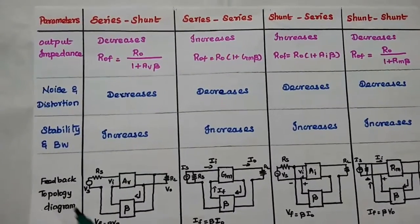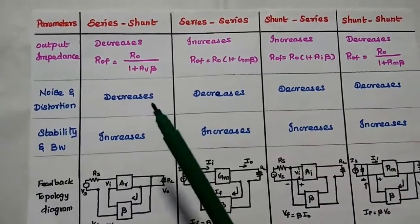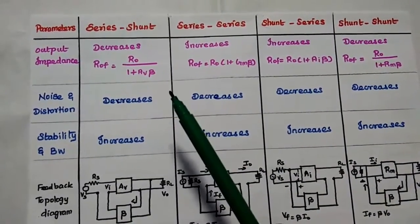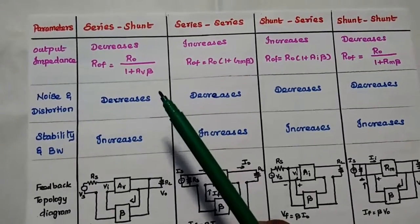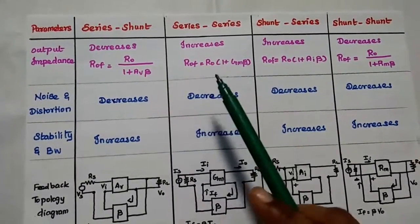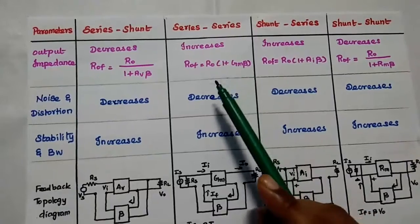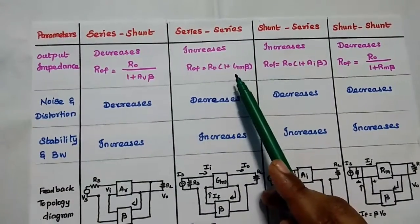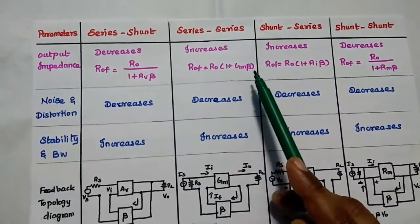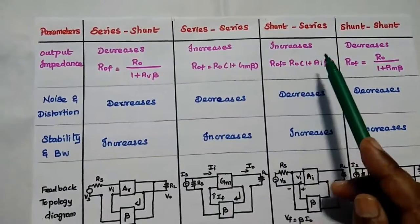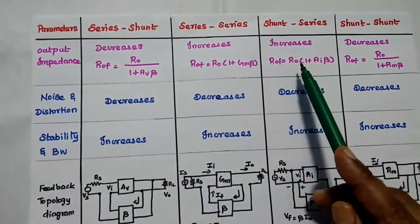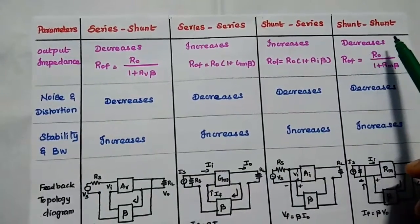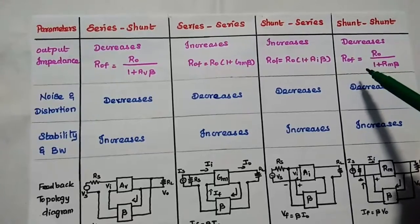The output impedance for series-shunt connection is decreased by the factor (1 + Av·β). For series-series (transconductance), the output impedance is increased by the factor (1 + Gm·β). For shunt-series, the output impedance is increased by the factor (1 + Ai·β). For shunt-shunt, it is decreased.